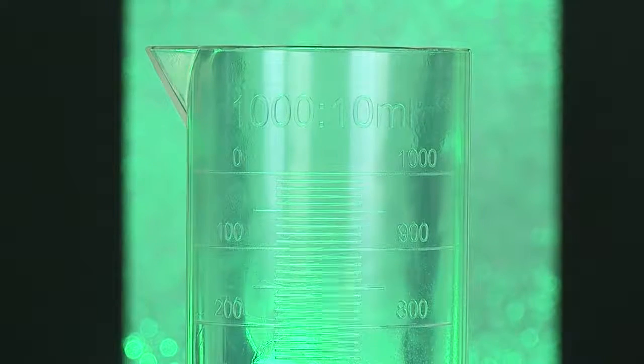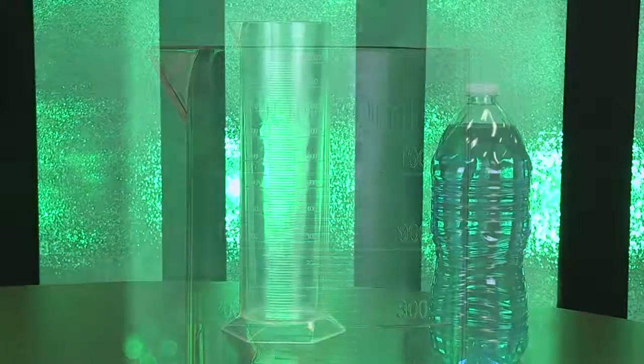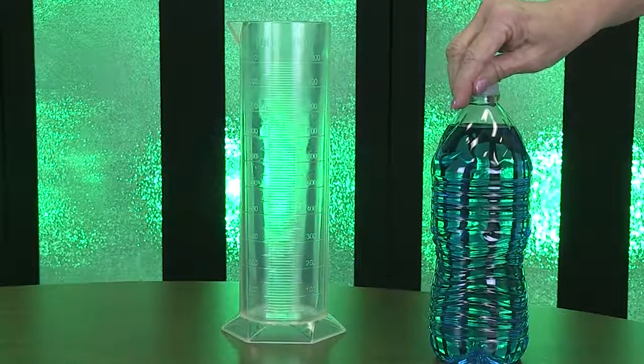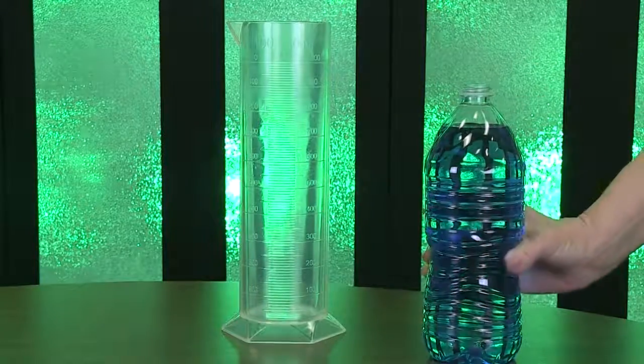To get an exact volume of one liter, it must be measured exactly to this line. This is a liter bottle of water. Notice that the water doesn't go all the way to the lid. The place where the water stops is one liter.